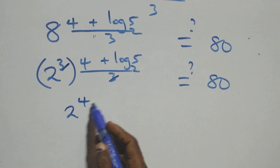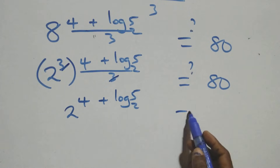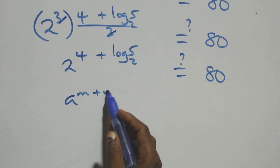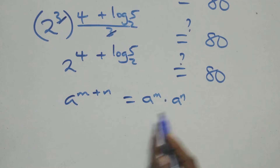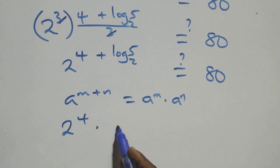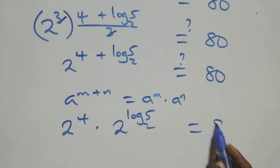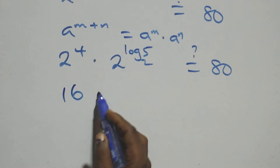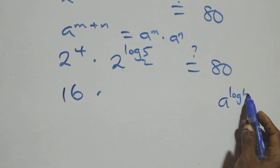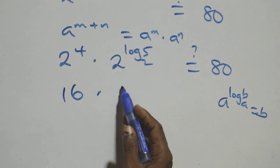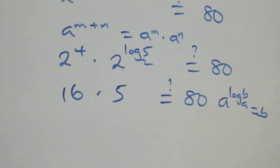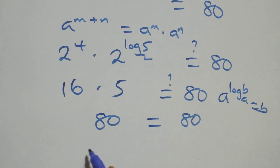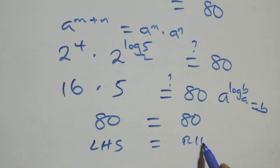We express 8 as 2³, so (2³) raised to power (4 + log₂5)/3 equals 80. The 3s cancel, giving 2 raised to power (4 + log₂5) equals 80. By the law of indices, this becomes 2⁴ times 2^(log₂5). Since 2⁴ equals 16, and 2^(log₂5) equals 5, we get 16 times 5 equals 80. Left-hand side equals right-hand side — verified!